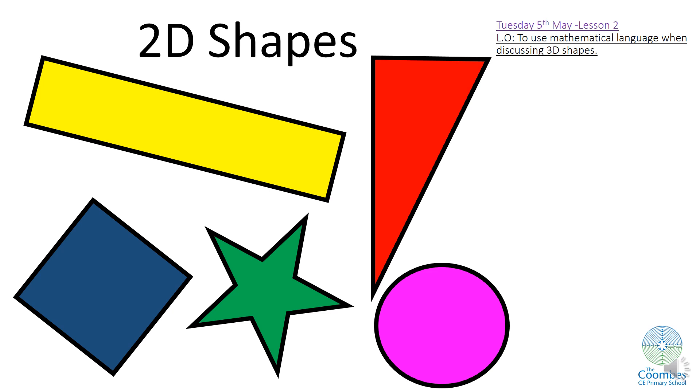Now remember yesterday we did a hand action to remind us about 2D shapes. There's something that's very important about 2D shapes. What is it? There's just one word that we can use to describe a 2D shape. Brilliant, it's that they are flat. Let's say that again together: 2D shapes are flat. Let's say the whole sentence together: 2D shapes are flat.